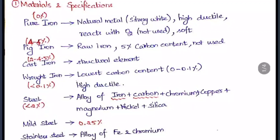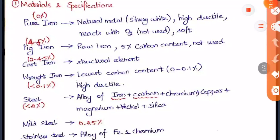Before going into steel, let us see something about iron. There are different types of iron. The first is pure iron, which has zero percentage carbon content. It is a natural metal of silvery white colour, which is highly ductile and reacts with oxygen easily, so it is not used for construction purposes.